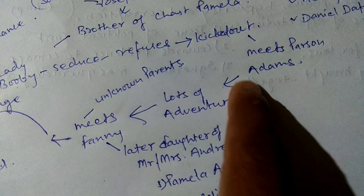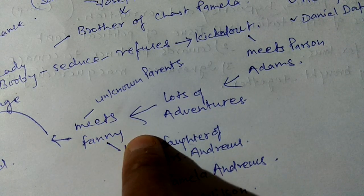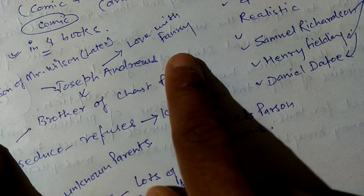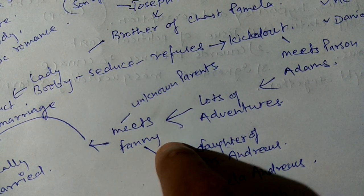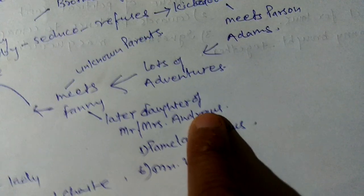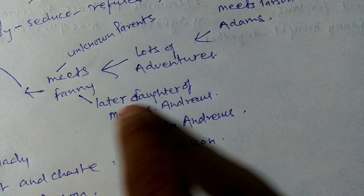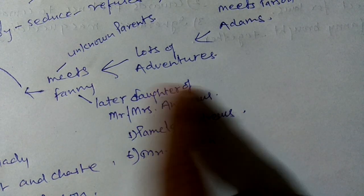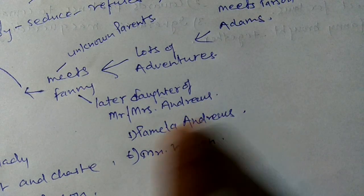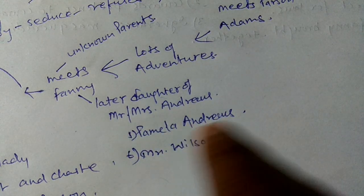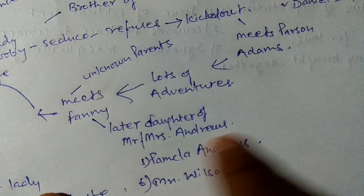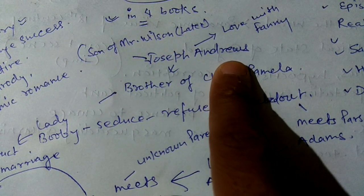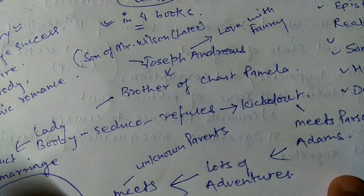After many adventures, he meets Fanny, who is his beloved — his childhood friend he is in love with. Her parents are unknown, but later it comes to light that she was the daughter of Mr. and Mrs. Andrews. Pamela Andrews is the sister of Joseph Andrews, and as you know, there was a novel named Pamela written by Samuel Richardson.